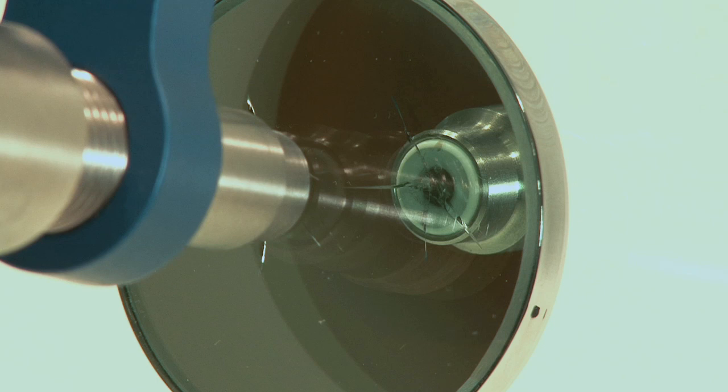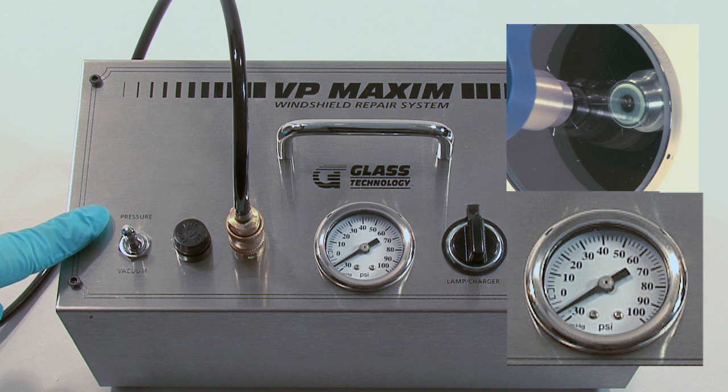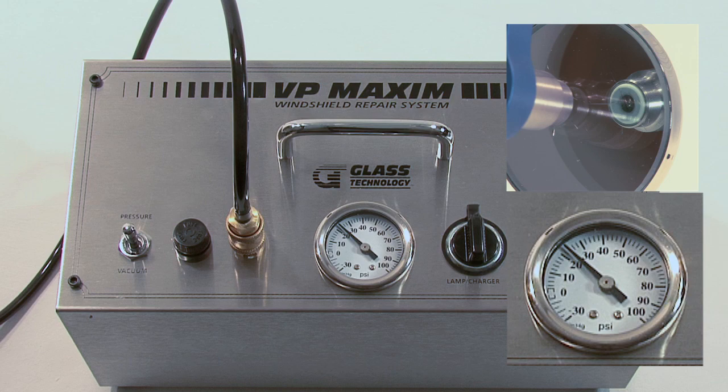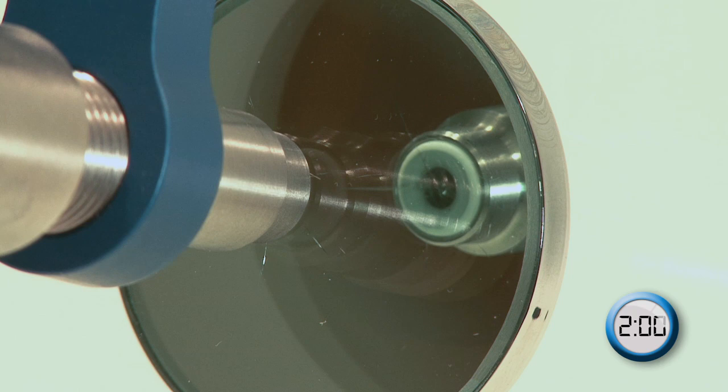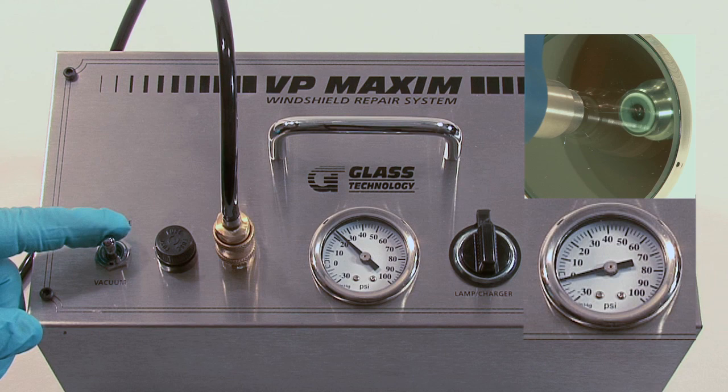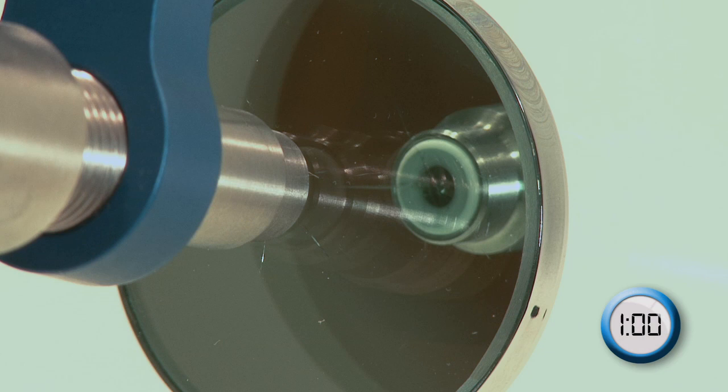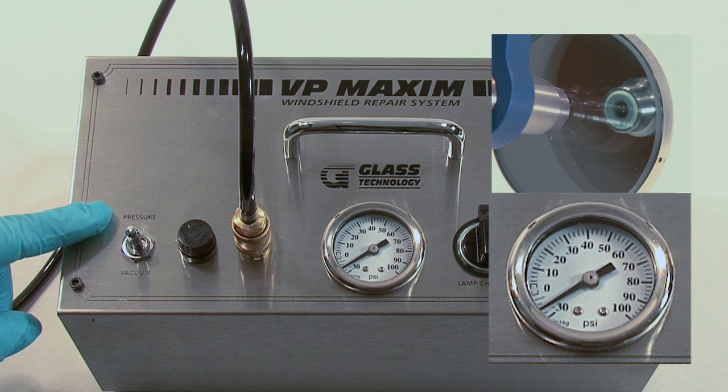Allow several seconds for the resin to completely drain from the reservoir and then flip the vacuum pressure toggle switch to 25 pounds of pressure. This will allow the resin to further penetrate the cracks of the repair. Hold in the pressure position for a full two minutes. End the first pressure cycle by using the vacuum pressure toggle switch and flip the switch back to vacuum until the needle stops moving. This is the beginning of your second vacuum cycle. Hold in the vacuum position for another full minute. Now begin the second pressure cycle by flipping the vacuum pressure toggle switch to 30 pounds of pressure. Hold it in the pressure position for a full two minutes.